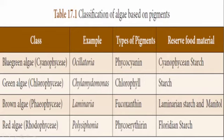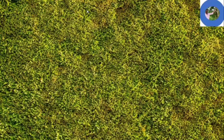Green algae belong to Chlorophyceae. The pigment is chlorophyll, and an example is Chlamydomonas. With the help of chlorophyll, it prepares its own food. The reserve food material stored is starch.